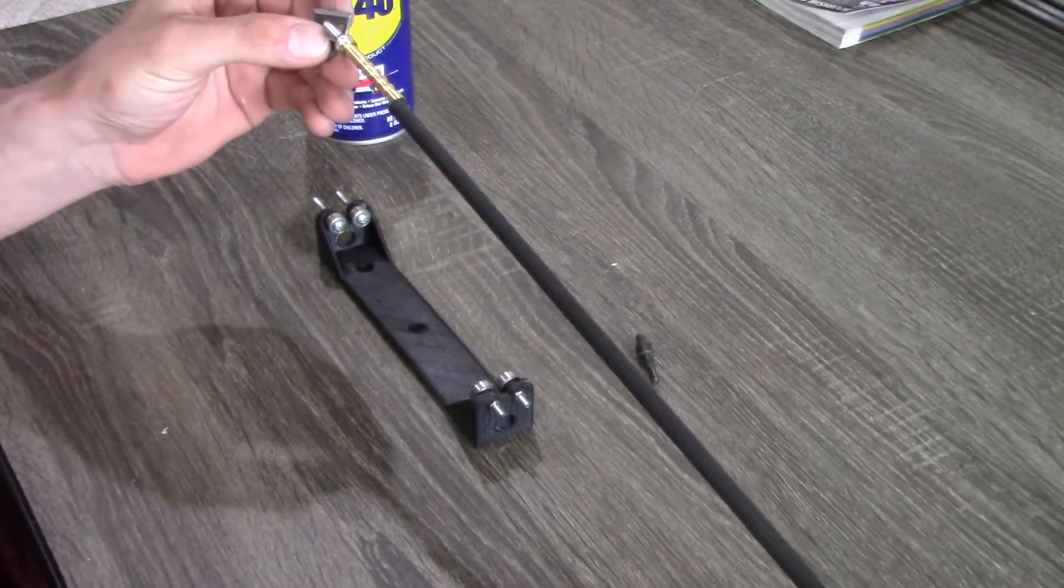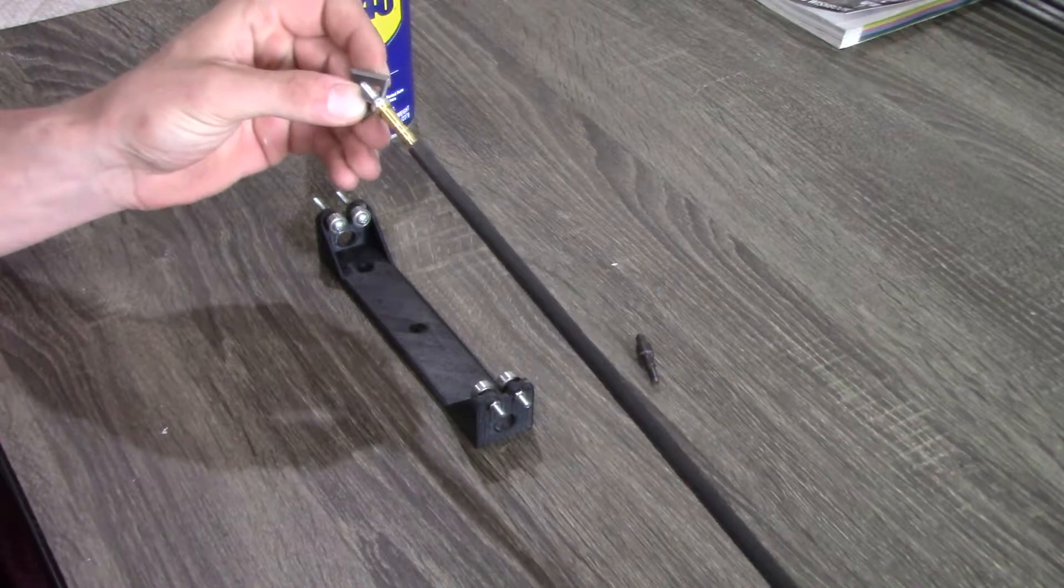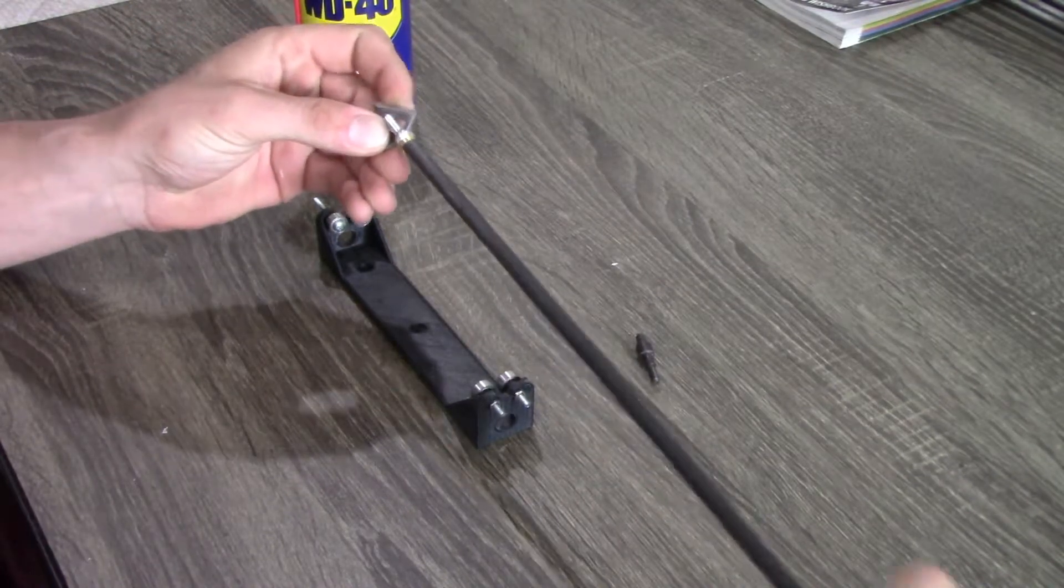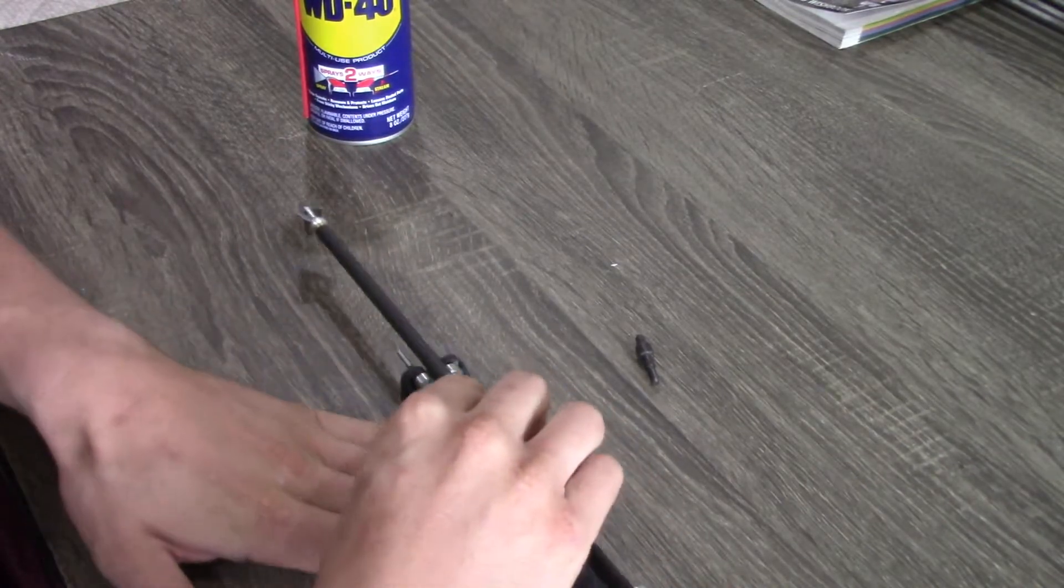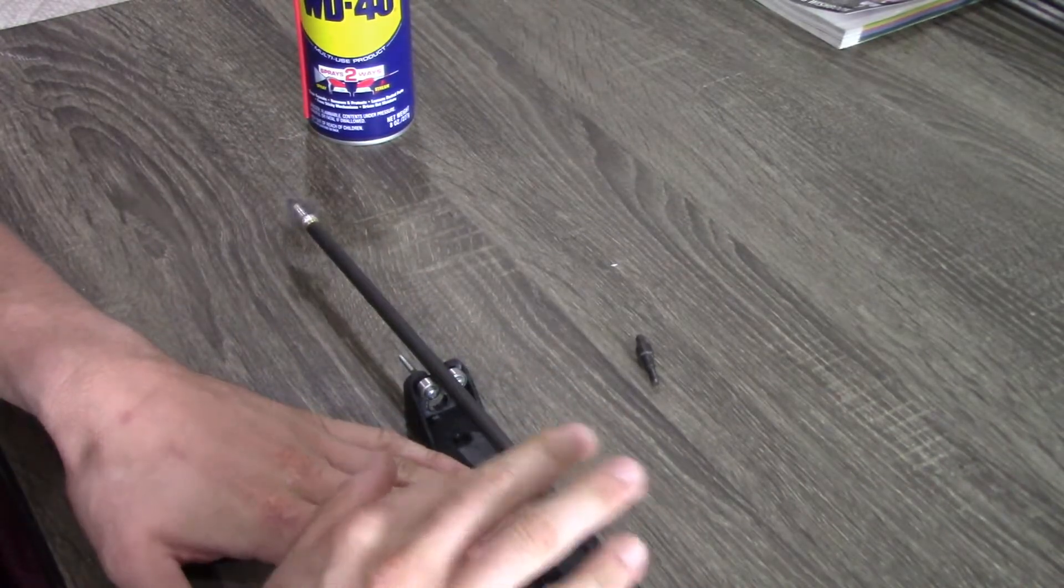So I'm going to go ahead and install a broadhead. I'm using the Steel Force Fathead 100-grain here, and I'm going to dry-fit the insert with broadhead attached into the arrow and spin it to make sure the insert is aligned with the arrow shaft.